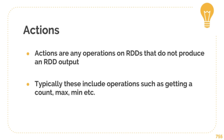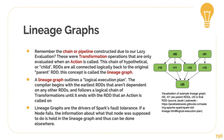So let's talk about Actions. Actions are any operations on RDDs that do not produce an RDD output — like getting count, max, minimum, or these types of aggregation operations. Now let's look at Lineage Graphs. The graph is constructed lazily — it basically stores all the hypothetical chains that can arise from that execution. Those are called transformation operations, and they're only evaluated once an action is called. This chain of child operations is called a Lineage Graph. The Lineage Graph outlines a logical execution plan, with the compiler beginning with the earliest RDD not dependent on any others. The transformation chain continues until it reaches the last logical transformation at the end of that RDD chain.